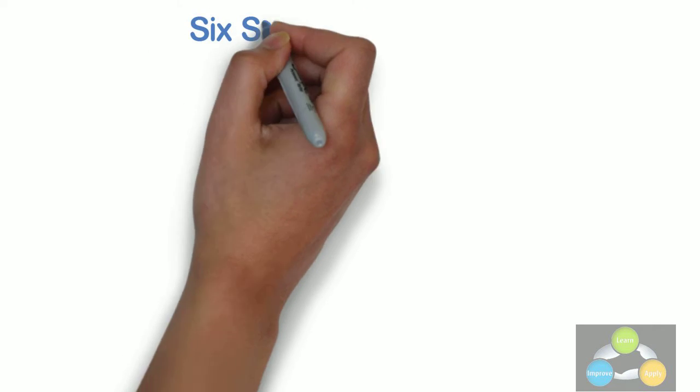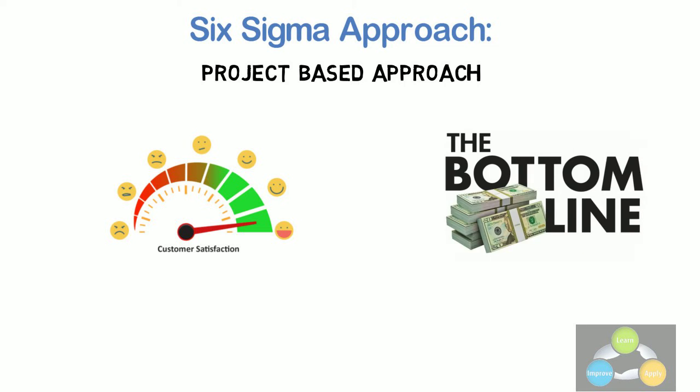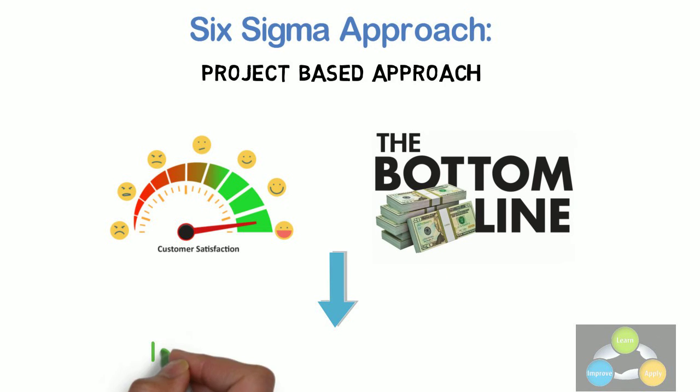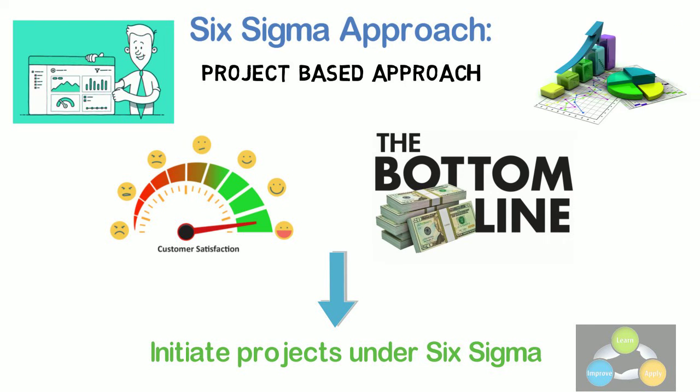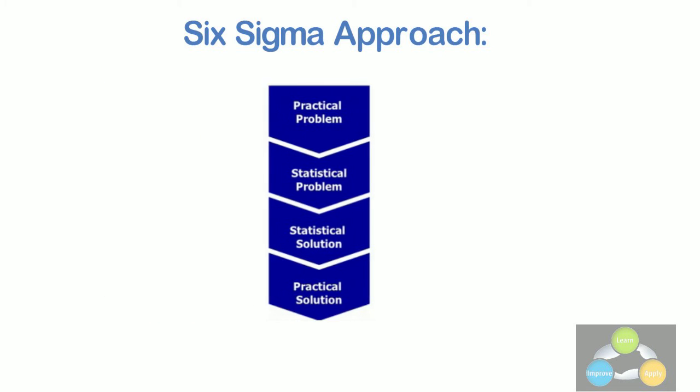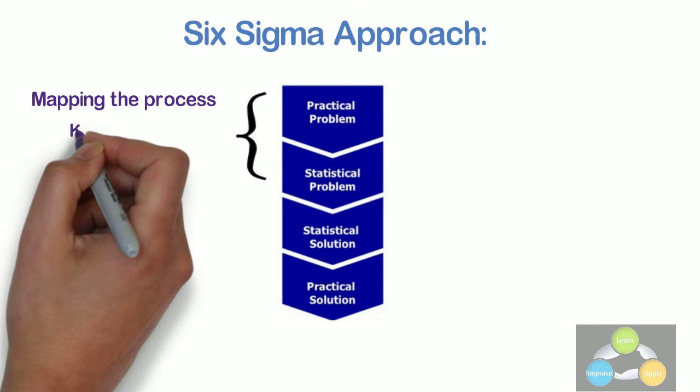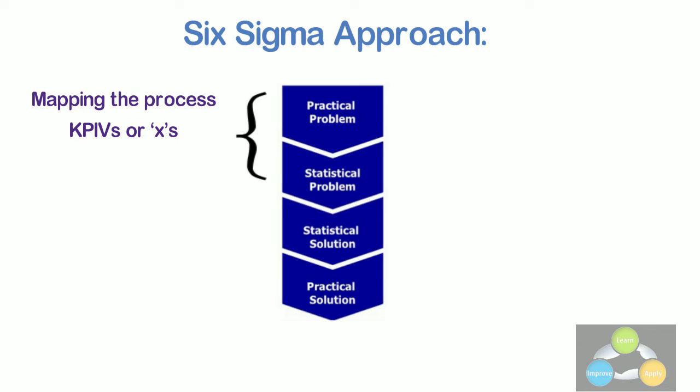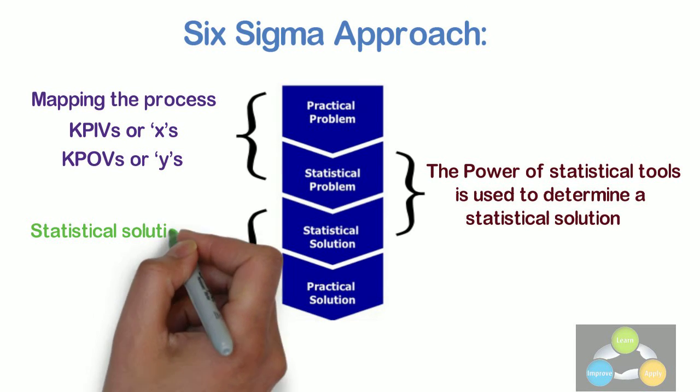Now the next important topic is a Six Sigma approach. Six Sigma is a project-based approach. The projects having large impact on customer satisfaction and significant impact on bottom line are selected to initiate projects under Six Sigma. One of the major differences between Six Sigma and other improvement approaches is its significant dependence on data-based approach using statistical methods. In the overall approach, the practical problem is converted into a statistical problem. This is done by mapping the process, defining key process input variables, we are calling it KPIVs or Xs, and key process output variables, we are calling it KPOVs or Ys. The power of statistical tools is used to determine a statistical solution, and this is then converted into a practical solution.